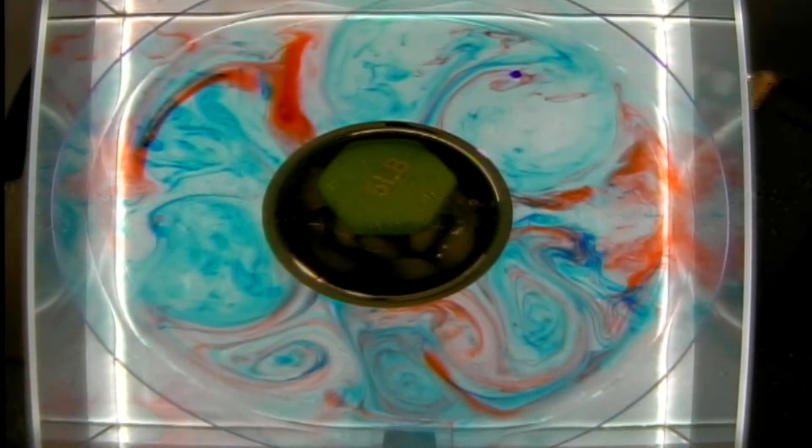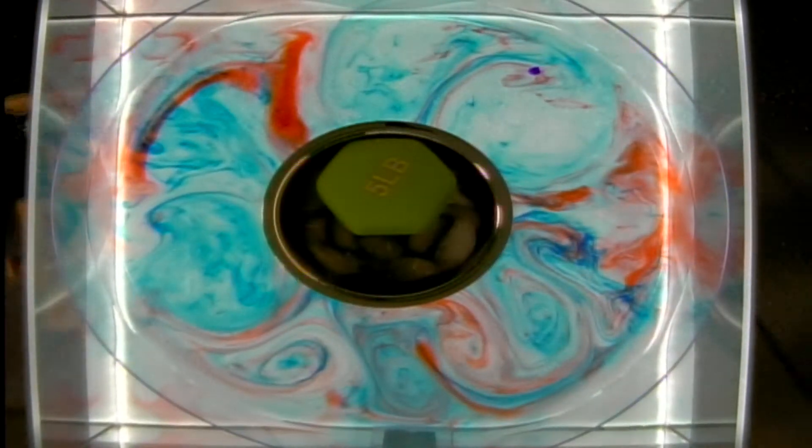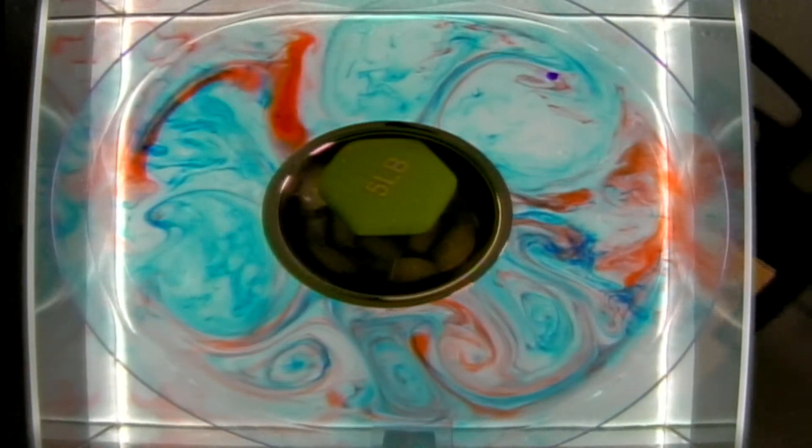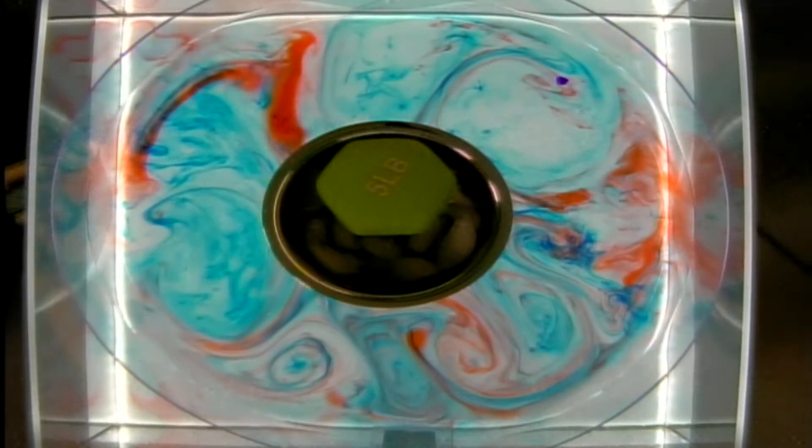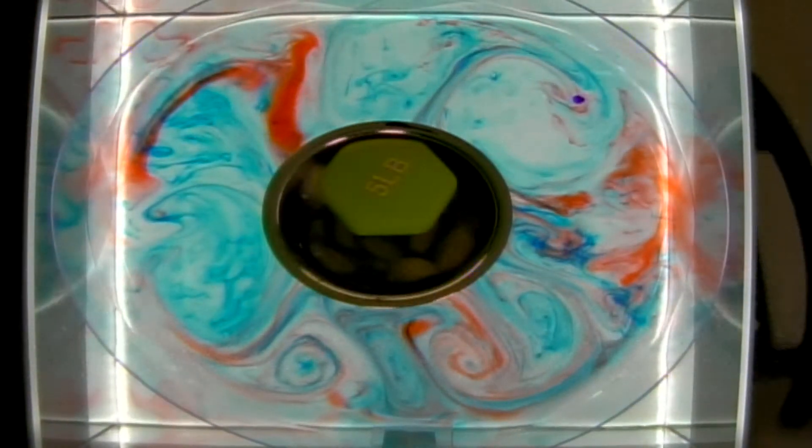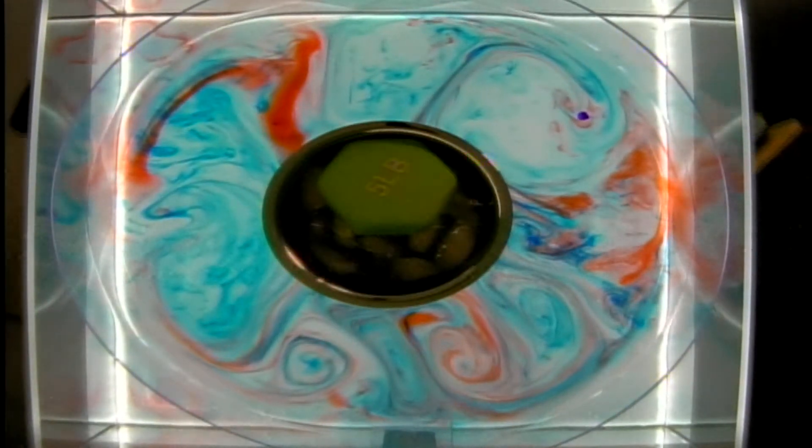These eddies are the same type of phenomena as the weather systems we have in the mid-latitudes on Earth. Those weather systems also act to transport energy and heat from the warm tropics towards the cold poles and mix across that gradient.